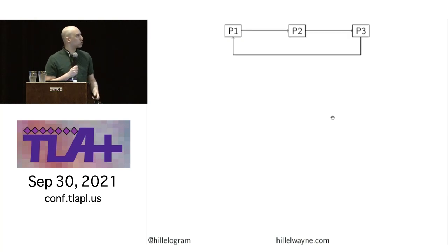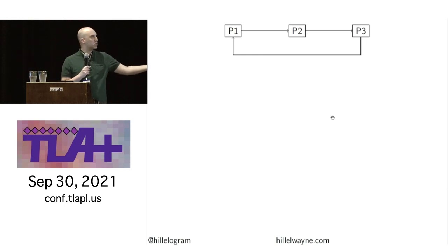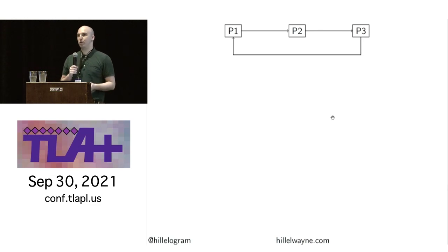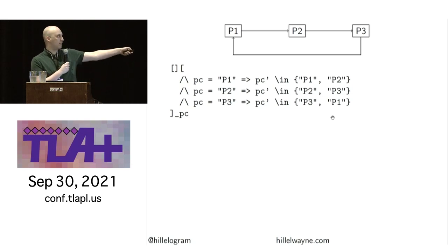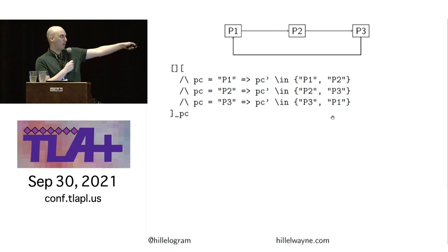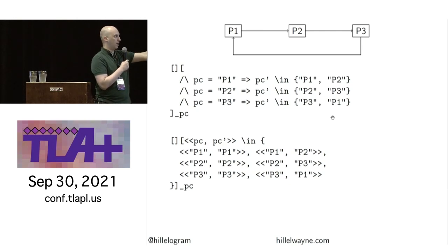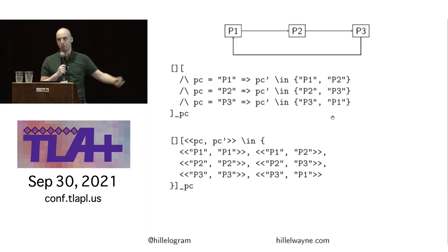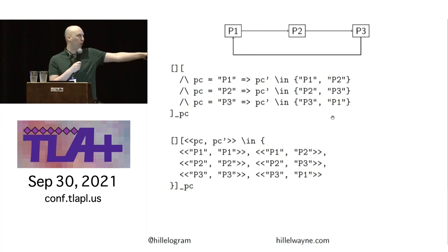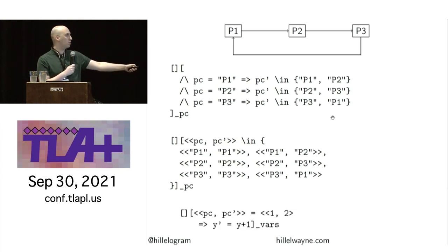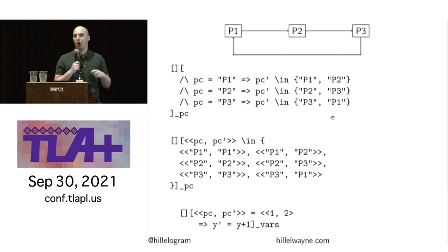Let's go through a particular example where this is very valuable. If I have a state machine with three transitions — P1 to P2, P2 to P3, P3 to P1 — I can use action properties to enforce boundaries on state transitions. If I say 'if PC equals P1, then PC' is in {P1, P2},' this says we cannot transition from P1 to P3 directly. You can write this more compactly if everyone is at the same expertise level. We can also enforce that certain state transitions require other things to be true, like incrementing Y by one when transitioning from state one to state two — similar to a Mealy machine.